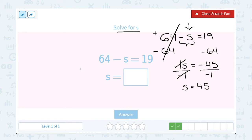To check your work, 64 minus 45, does that give me 19? Yes, 64 minus 45 is 19.